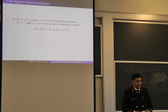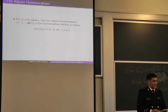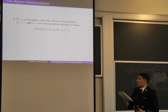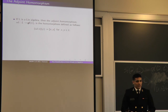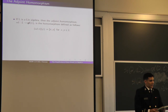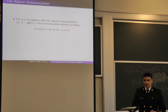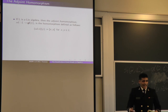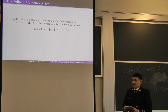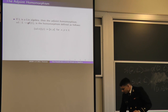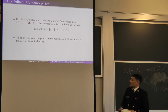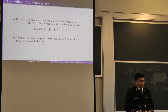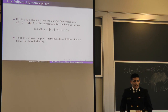Our most important homomorphism is the adjoint homomorphism. It is the homomorphism that takes X in L and sends it to a linear map ad(X) in gl(L), the space of linear maps from L into itself. The adjoint map ad(X) takes an element Y and sends it to [X, Y]. You can check it satisfies the homomorphism property because that condition falls out as the Jacobi identity.